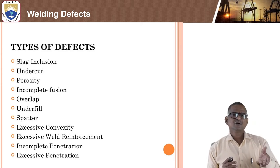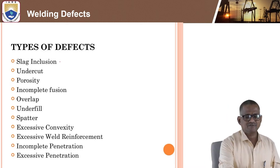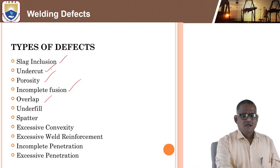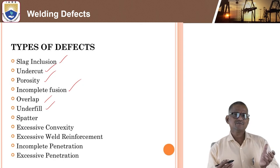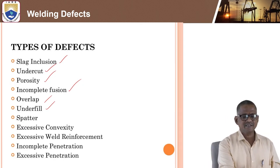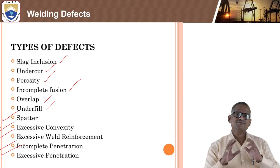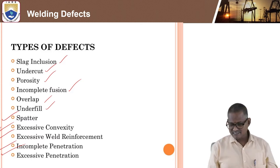There are more than ten total welding defects, divided into two parts. Part one covers: slag inclusion, undercut, porosity, incomplete fusion, overlap, and underfill. Part two covers: spatter, excessive convexity, excessive weld reinforcement, incomplete penetration, and excessive penetration. We will discuss how each occurs, its causes, and remedies.